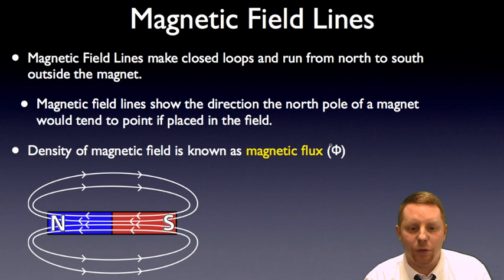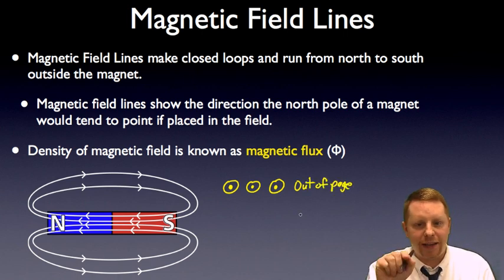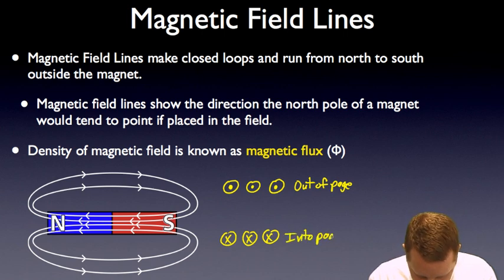Now because we're going to be dealing with fields and forces in three dimensions, how we're going to deal with that is if we have something coming out of the plane of the page, it would look kind of like this, as if you have the point of an arrow coming toward you. That's out of the page. If it were going into the plane of the page, into the plane of the screen, you would see the fletchings on the arrow, so you have an X as if the arrow is going away from you.